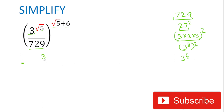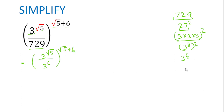So in the bracket we write 3 to the power of square root of 5, divided by 3 to the power of 6, and the whole bracket is raised to the power of square root of 5 plus 6. Since the base is the same (3 in both numerator and denominator), we use the rule a^m divided by a^n equals a^(m minus n), so we subtract the powers.